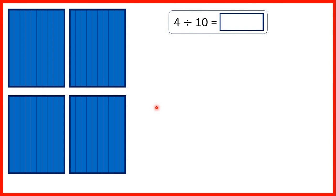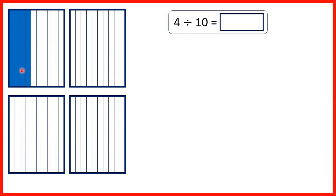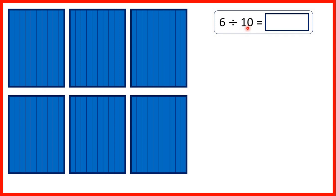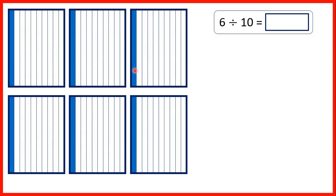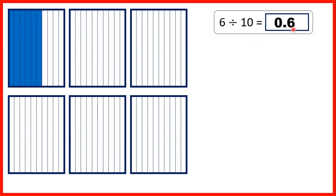Let's think about what we were doing here. For 4 divided by 10, we can show 4 whole rectangles all coloured in. Dividing by 10 is the same as finding a tenth, so if we keep only 1 tenth of each rectangle and put what's left together, we have 4 parts out of 10, or 4 tenths — that's why our answer is 0.4. With 6 divided by 10, dividing by 10 is like only keeping 1 part out of 10. So if we put what's left together, we have 6 tenths: 0.6, because the digit after the decimal point is our tenths digit.